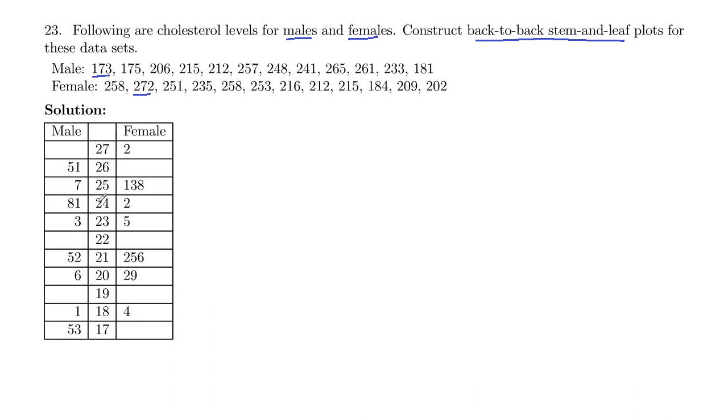So I did from 27 down to 17. It wouldn't be wrong to start at 17 and go up. And then I've got males on the left and females on the right, and then these are the ones digits that I plotted, and they increase as you go away from the middle.